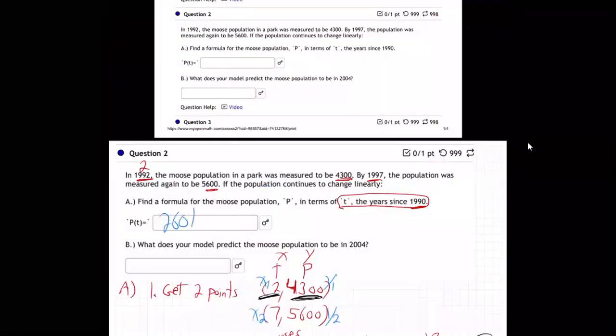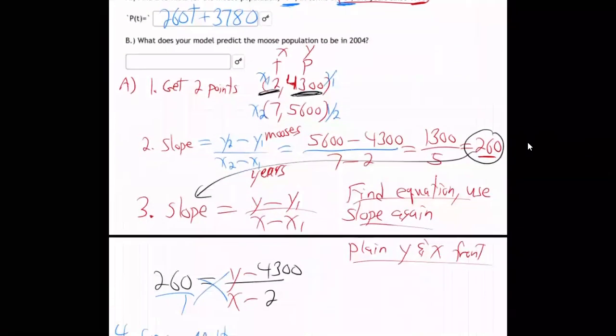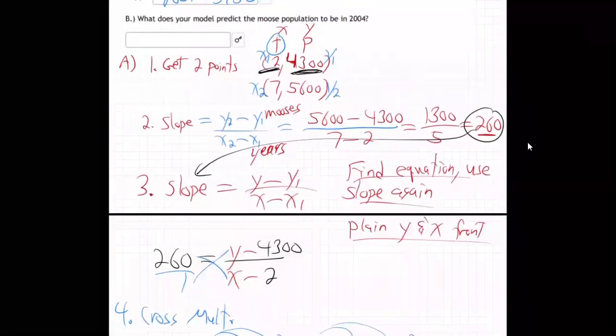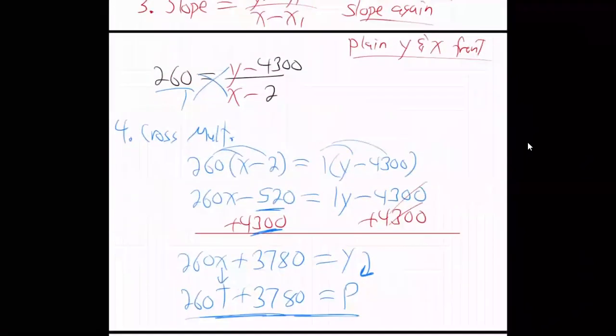So 260T plus 3780. So we've got to write P in terms of T. We got to go back to T in the end. Everybody good with that? I used T as X and P as Y. I just used X and Y throughout the problem because we're used to that. So there's the formula.